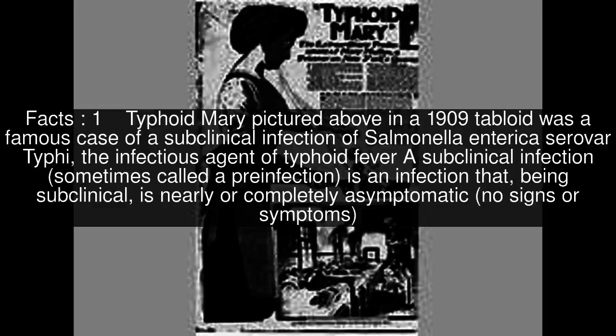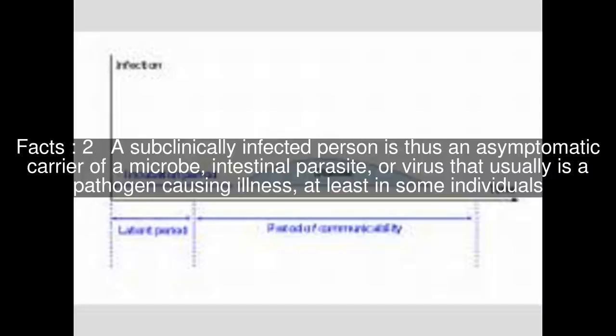A subclinical infection, sometimes called a pre-infection, is an infection that, being subclinical, is nearly or completely asymptomatic — no signs or symptoms. A subclinically infected person is thus an asymptomatic carrier of a microbe, intestinal parasite, or virus that usually is a pathogen causing illness, at least in some individuals.